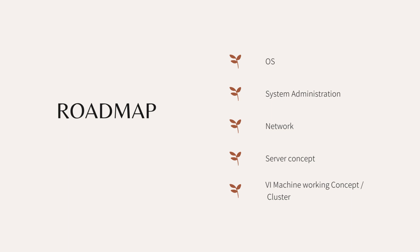Now the first thing is OS — OS is Linux and Windows. OS is operating and troubleshooting. All issues are very important in the beginning. Second is System Administrator. You can gather knowledge at that level and develop. And the third thing is Networking. In the network, you can use SSL, HTTP, and other protocols.